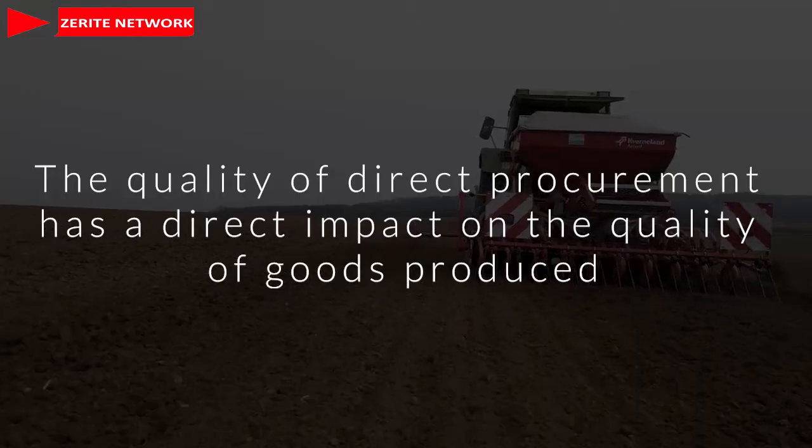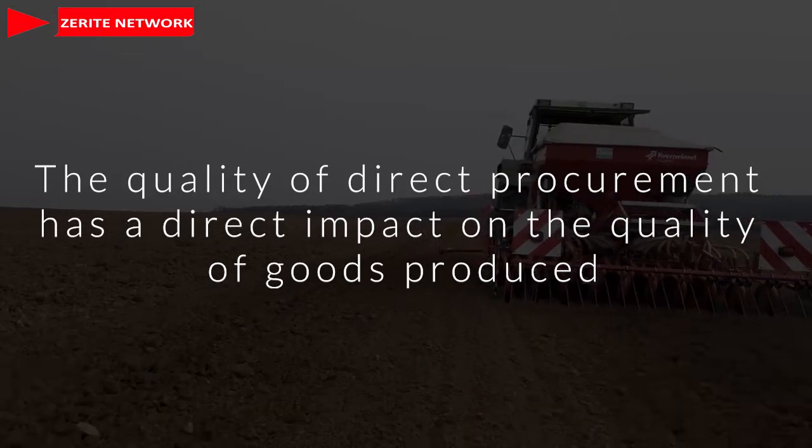Number one, the quality of direct procurement has a direct impact on the quality of goods produced. If you're producing a phone, every input, every material, every raw material that you need — if you buy an inferior product, it's going to show in the result of what you create. So whatever you're buying directly is going to affect the quality of what you're producing, and if the quality is low, that's going to be reflected in your profits.